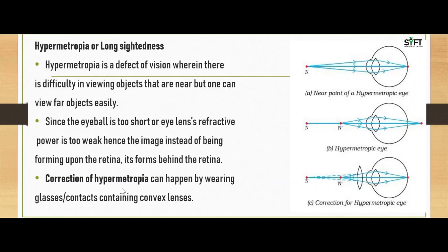Hypermetropia can be corrected by wearing glasses or contact lenses containing convex lenses. In myopia we use concave lenses; here in hypermetropia we use convex lenses. When convex lenses are used, as shown in the image, they allow the image to form upon the retina, thus correcting the defect of long-sightedness.